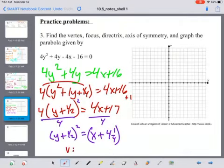I'm going to get y plus a half squared equals 1 times x plus 4 and a fourth. So my vertex here, for my x, it's going to be negative 4 and a fourth. And then my y is going to be negative a half.